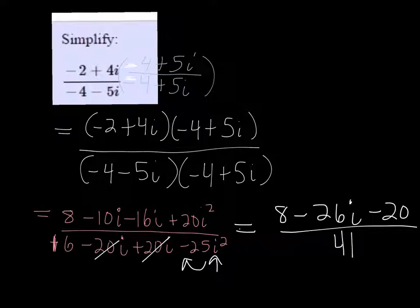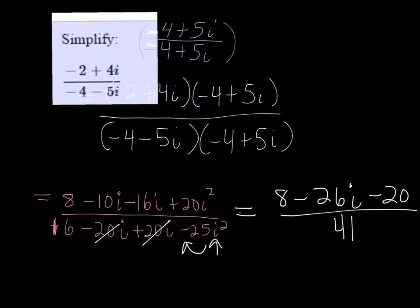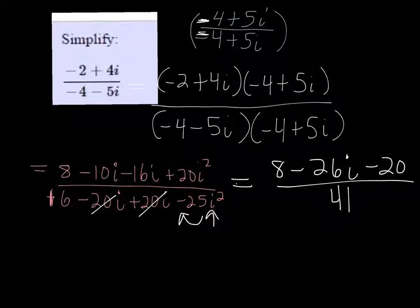And then we can simplify the top a little bit more, so 8 minus 20 is negative 12.